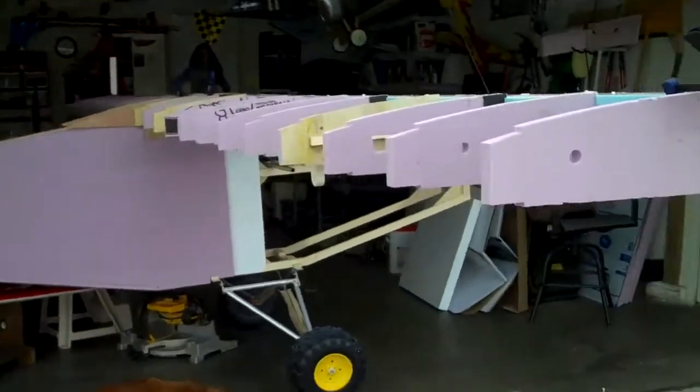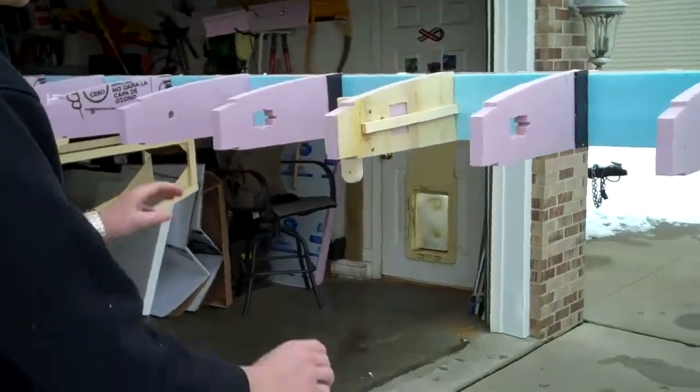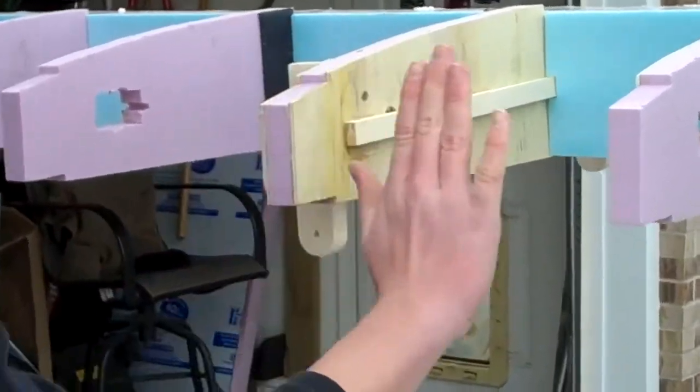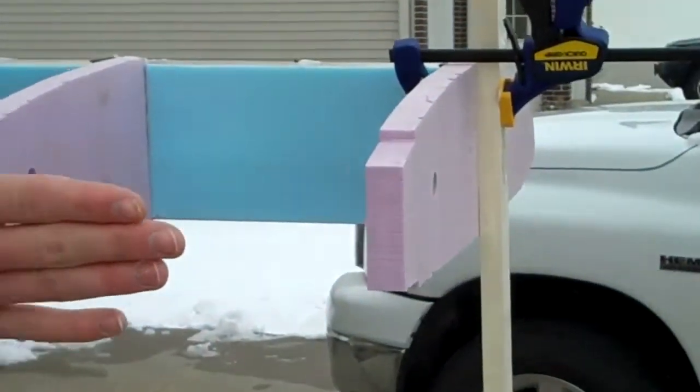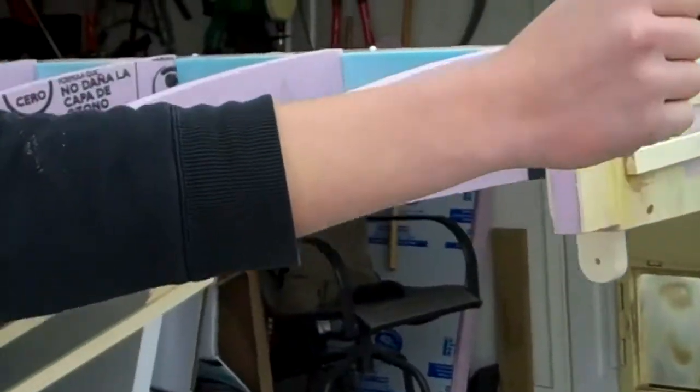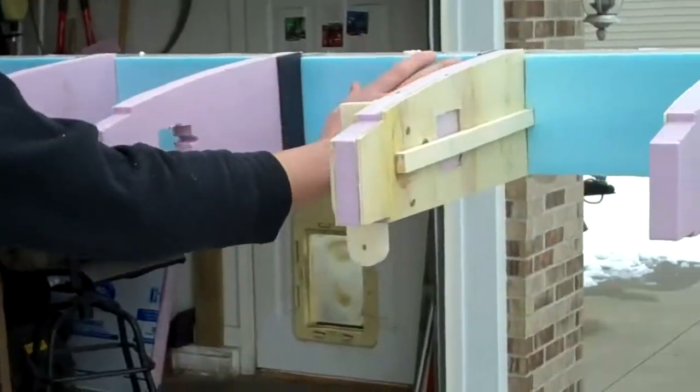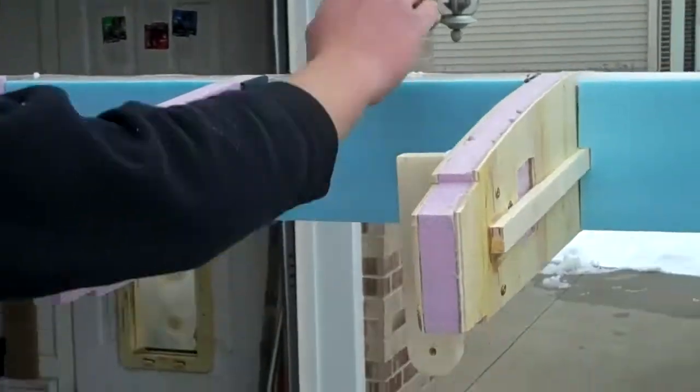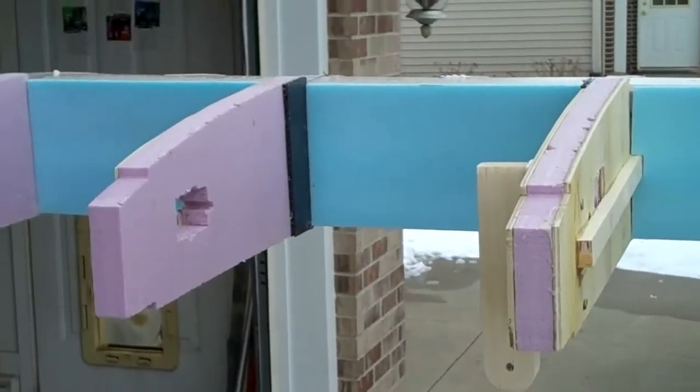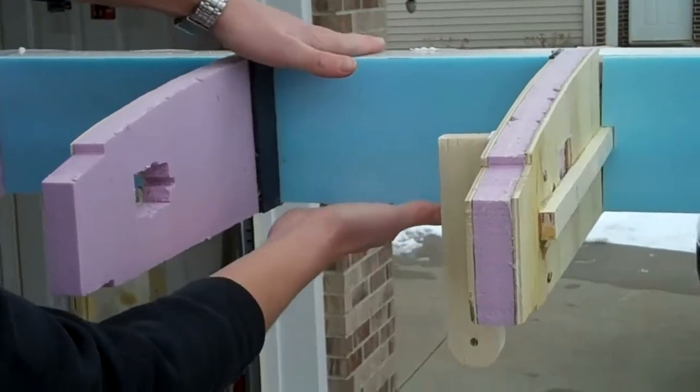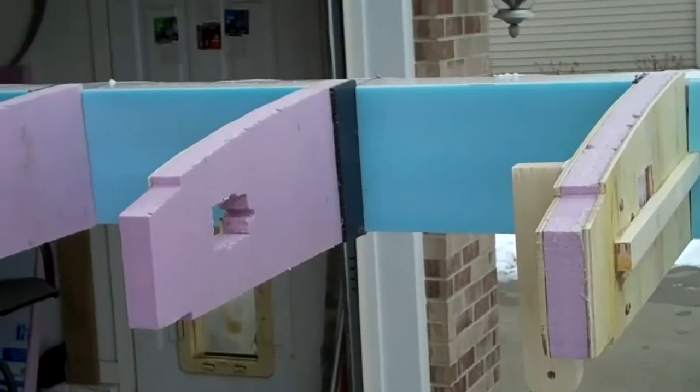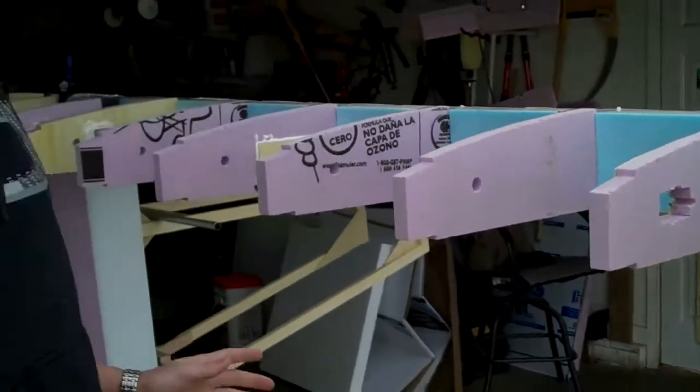If you come around over here, we still have to put on a rear spar that will keep the wings strong, prevent them from twisting forward and back. And we've got the blue foam in here, which hides a lot of that glue in between the two spars, top and bottom. But it's also giving it a lot of strength from flexing and bowing.